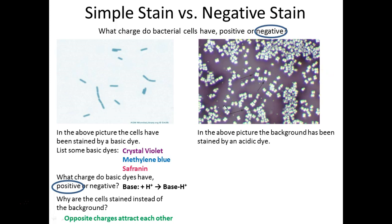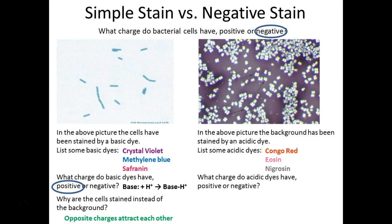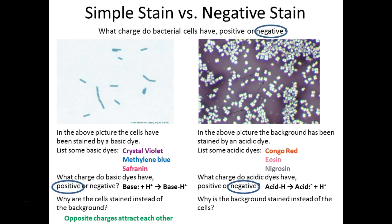For negative staining, we use acidic dyes, which have a negative charge. Acidic dyes we've used include Congo red and nigrosin — and eosin is another one, though we don't use it in this lab. These are negative, so they stain the background. Why? Because the cell is negative and the dye is negative — like charges repel each other.